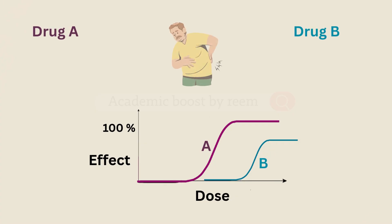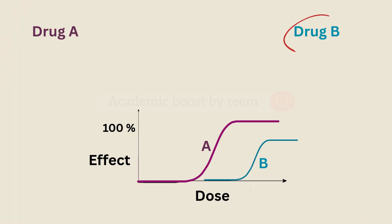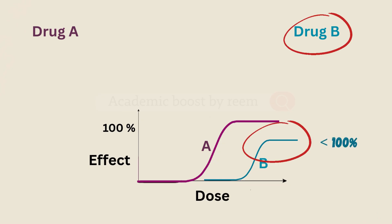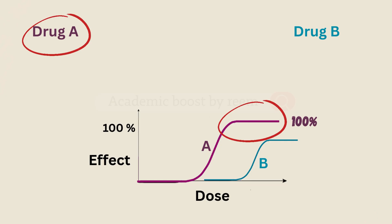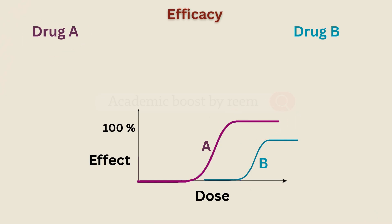Let's compare drug A and drug B. Both drugs can be used to treat pain, but notice the difference: drug B can only reduce pain partially, while drug A can completely eliminate it. This means that drug A has higher efficacy because it produces a stronger maximum effect.